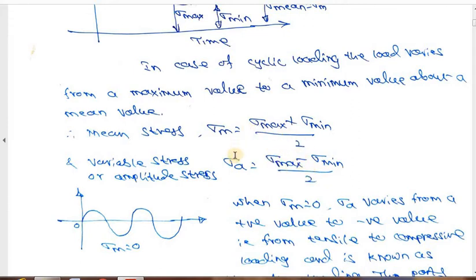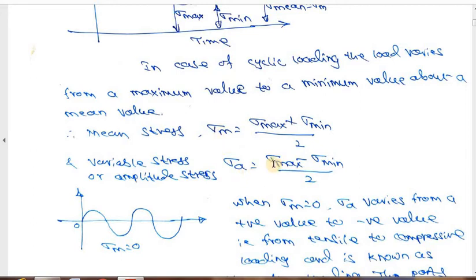If calculating in terms of load quantity, then maximum load plus minimum load divided by 2 gives the mean load. Instead of the sigma notation, you can use the load notation in this case.